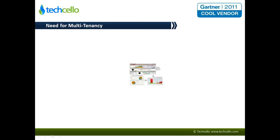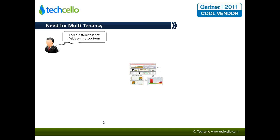Let's try to understand what actually brings multi-tenancy into the picture. First, let's understand the pain points around the normal way of doing things. When you have your own product, you will get customers, and customers will have various requirements that sometimes vary. The implementation phase typically involves implementing specific requirements for end customers. For example, a customer may ask for a particular form to contain their own specific set of fields, or they may not want some fields your product already has.